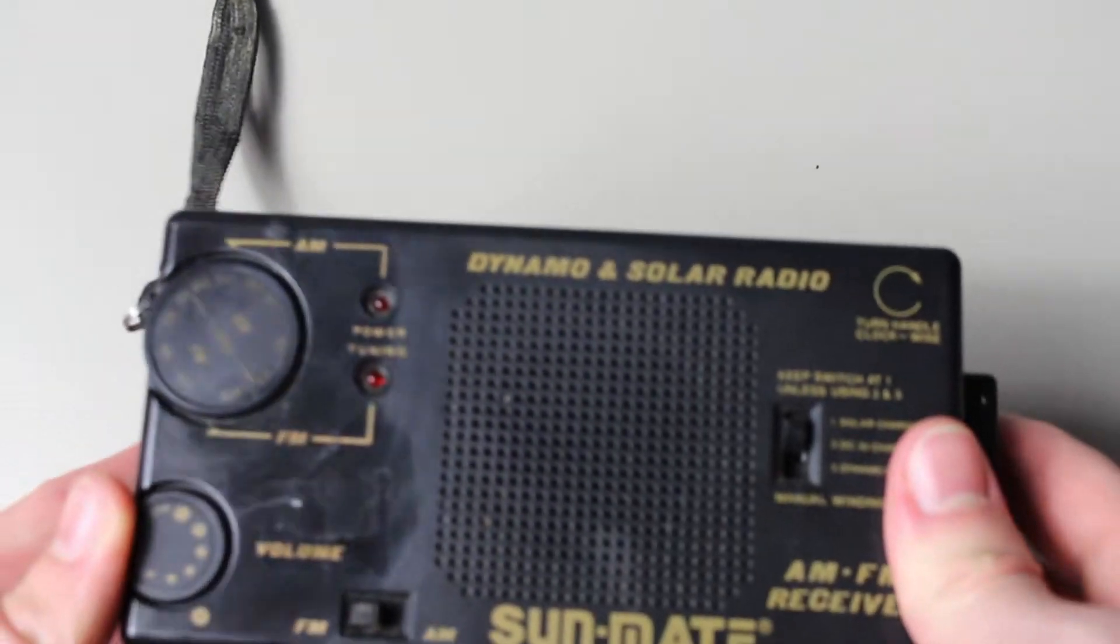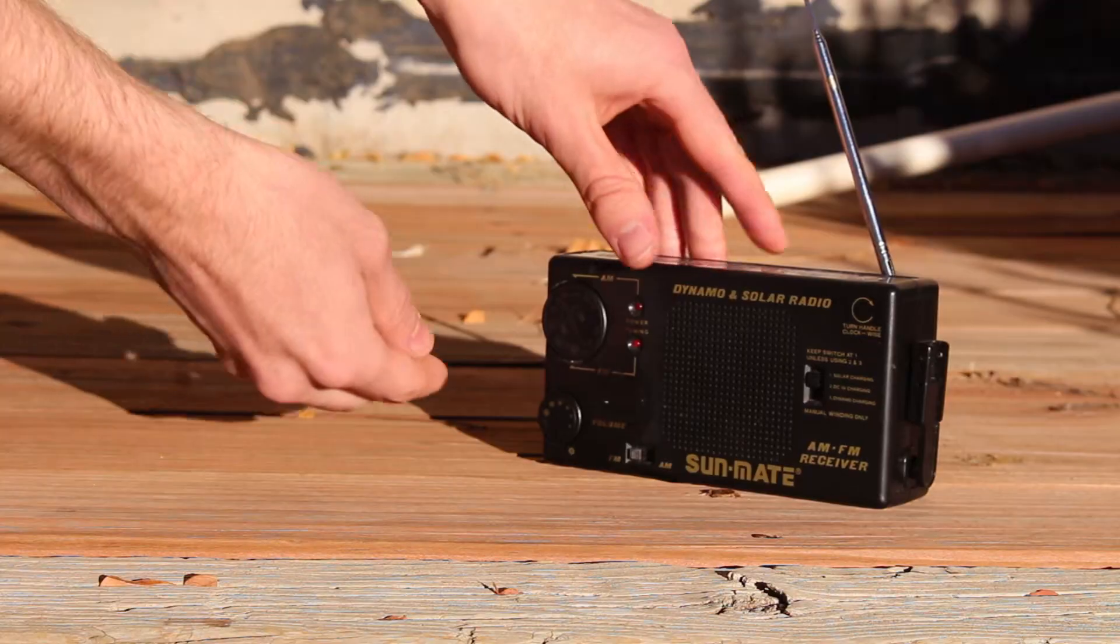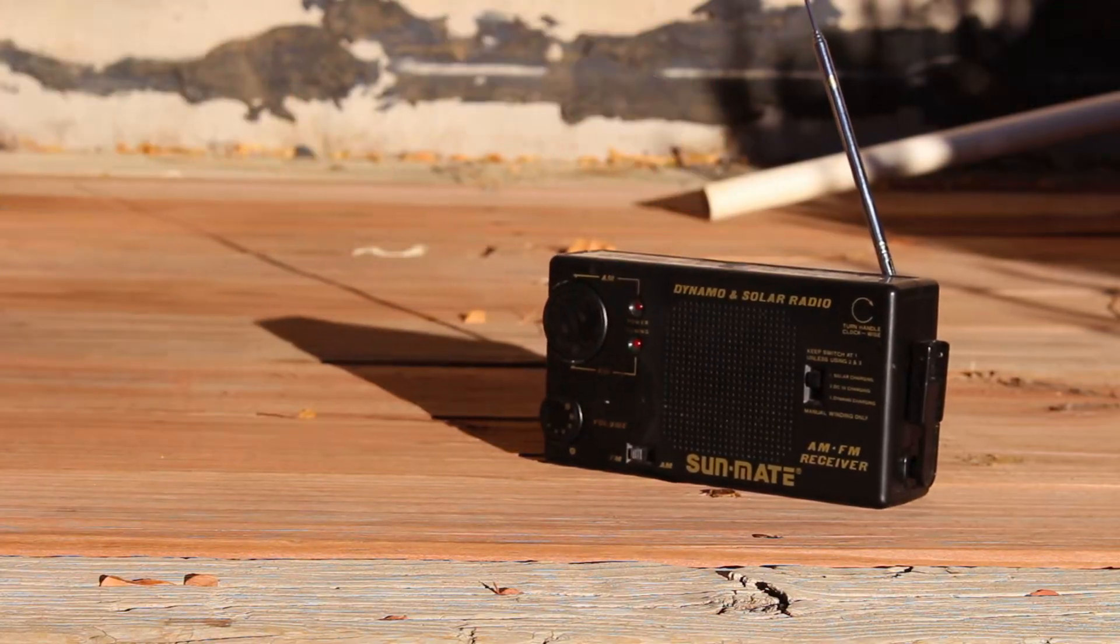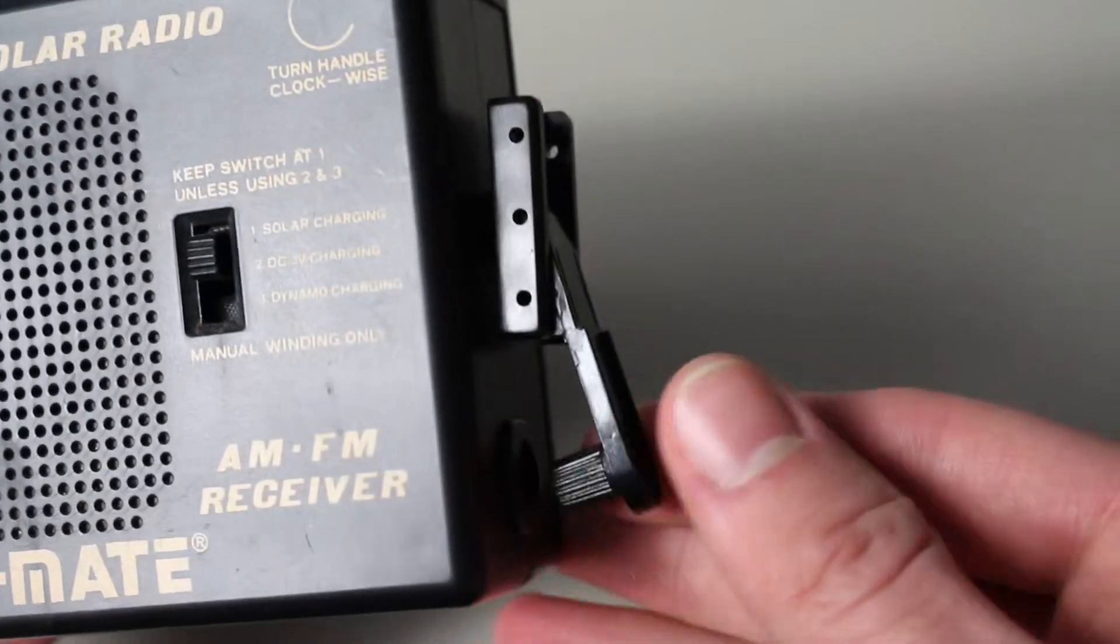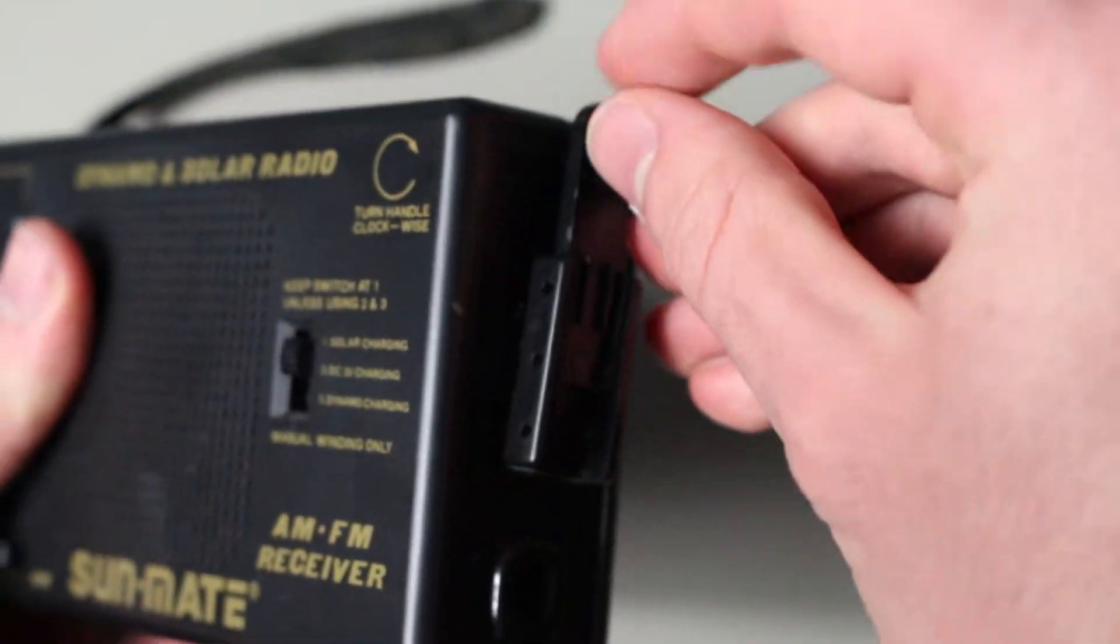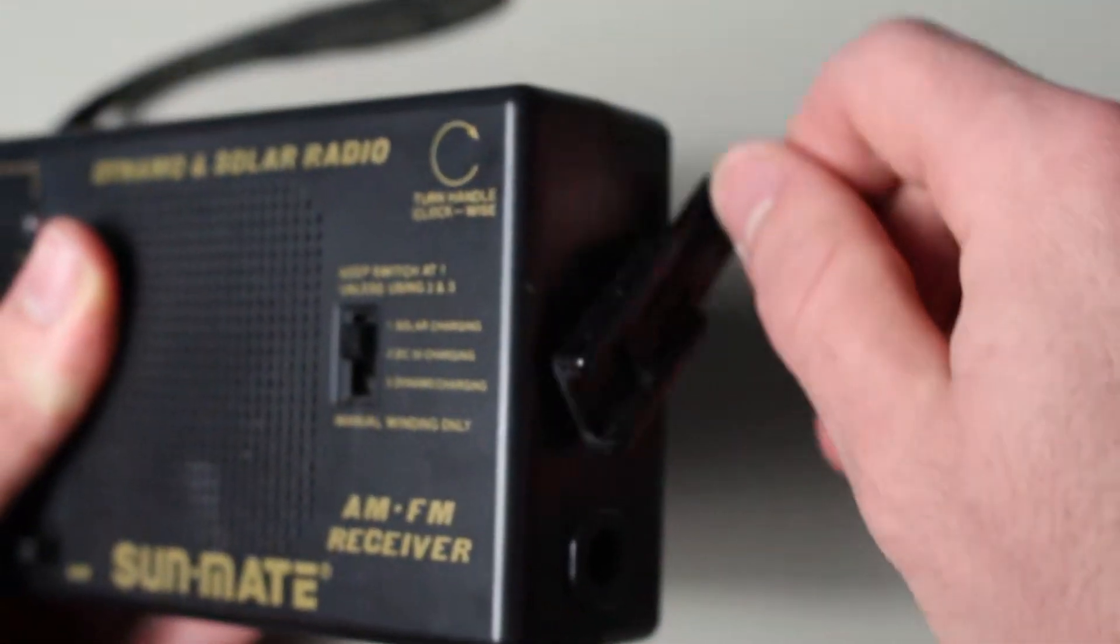However, it wouldn't stay powered even though it was constantly underneath the light source. I also tried the sunlight, but it got similar results. What about the dynamo charging? That should work, right? Well, no. I cranked this thing for a while and didn't even get it to turn on. So something is definitely wrong with it.